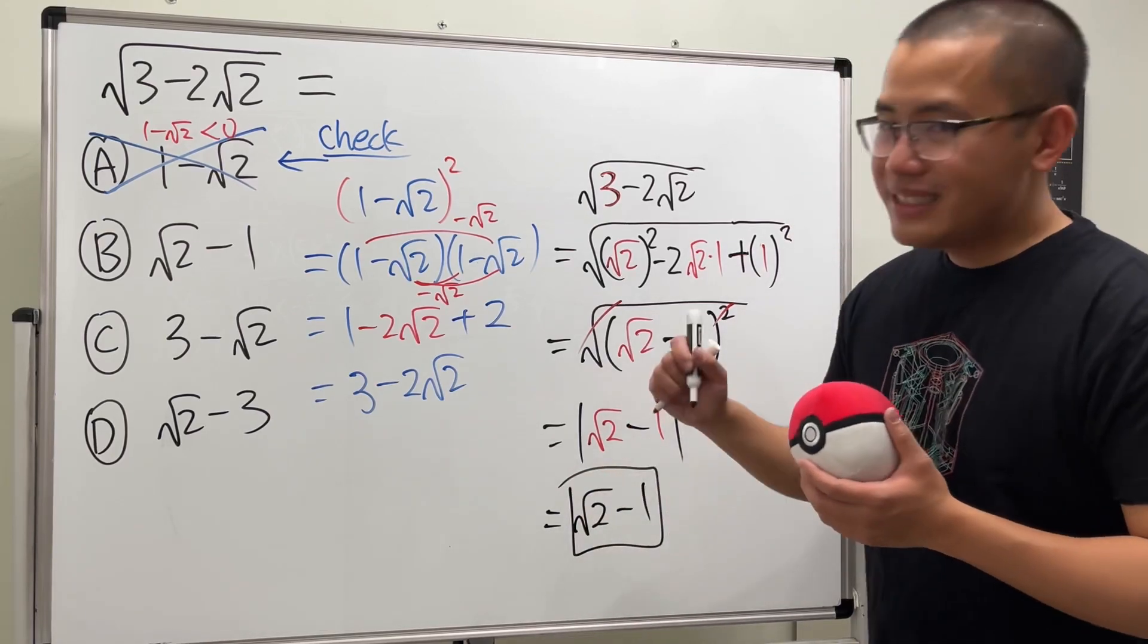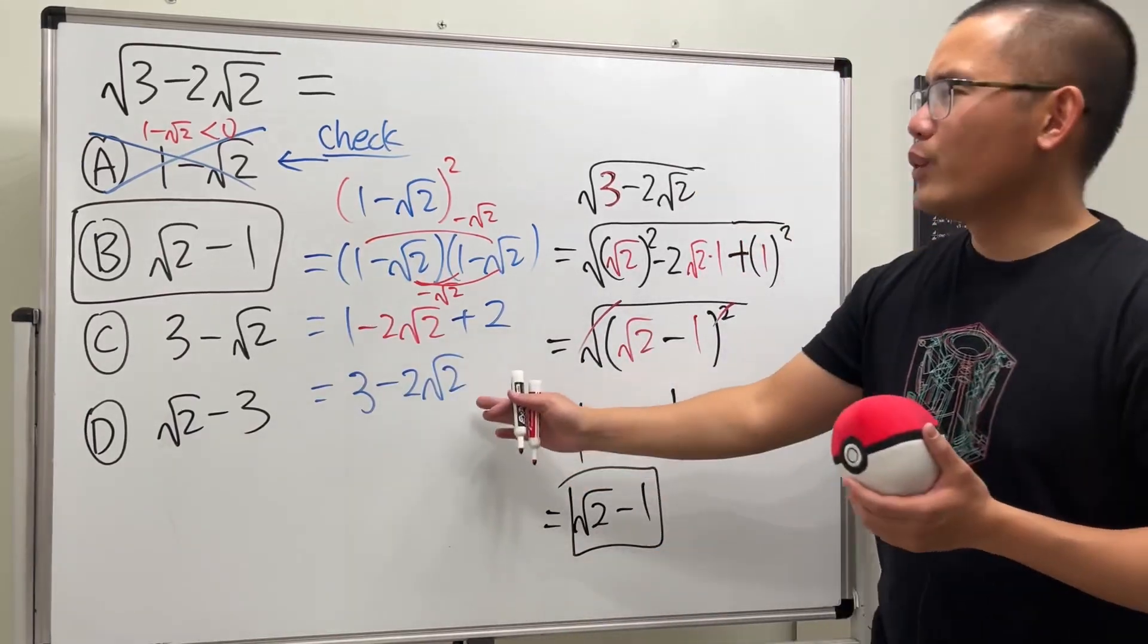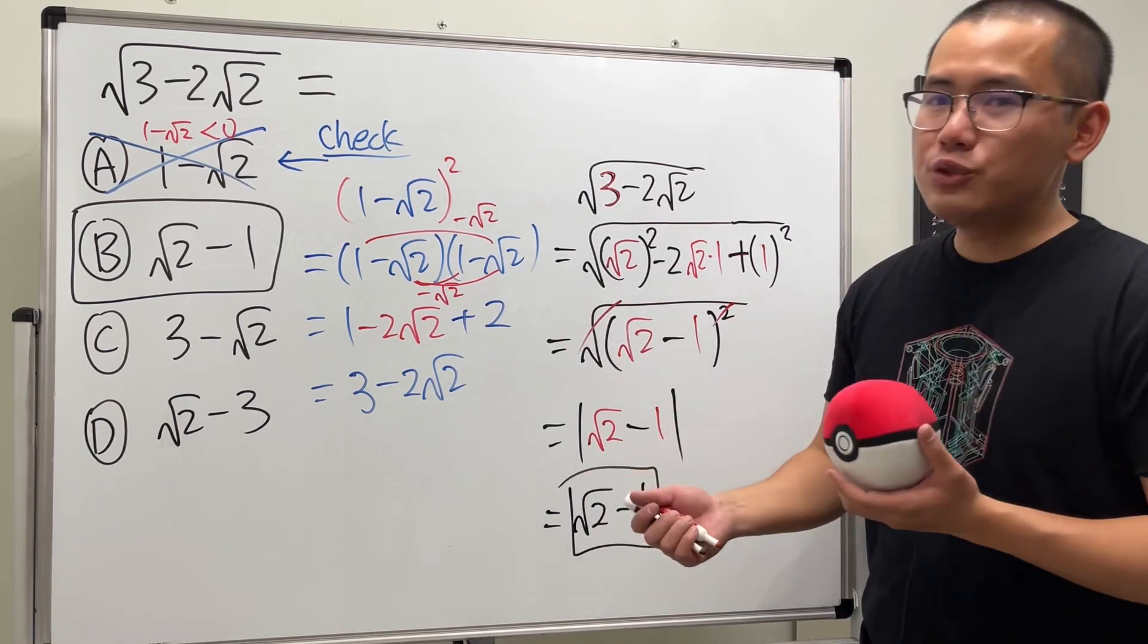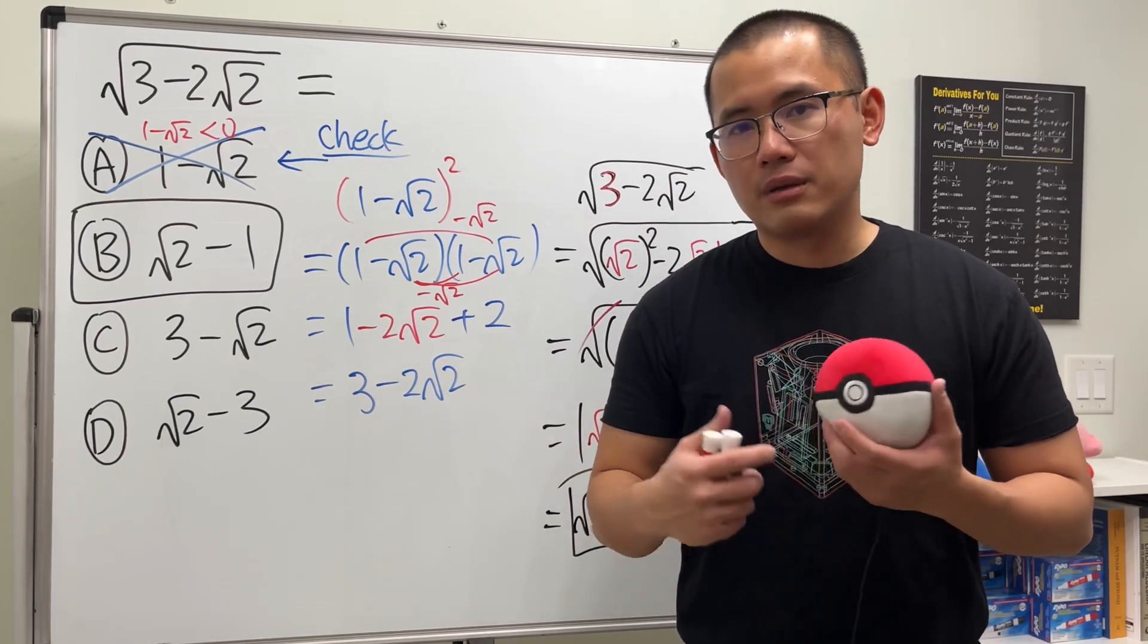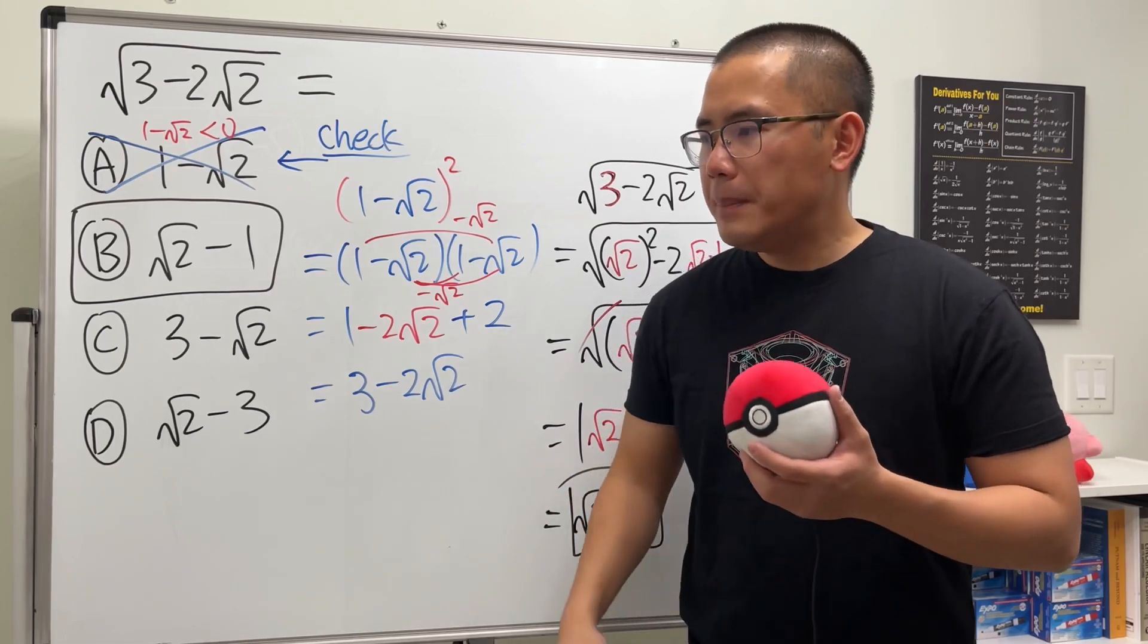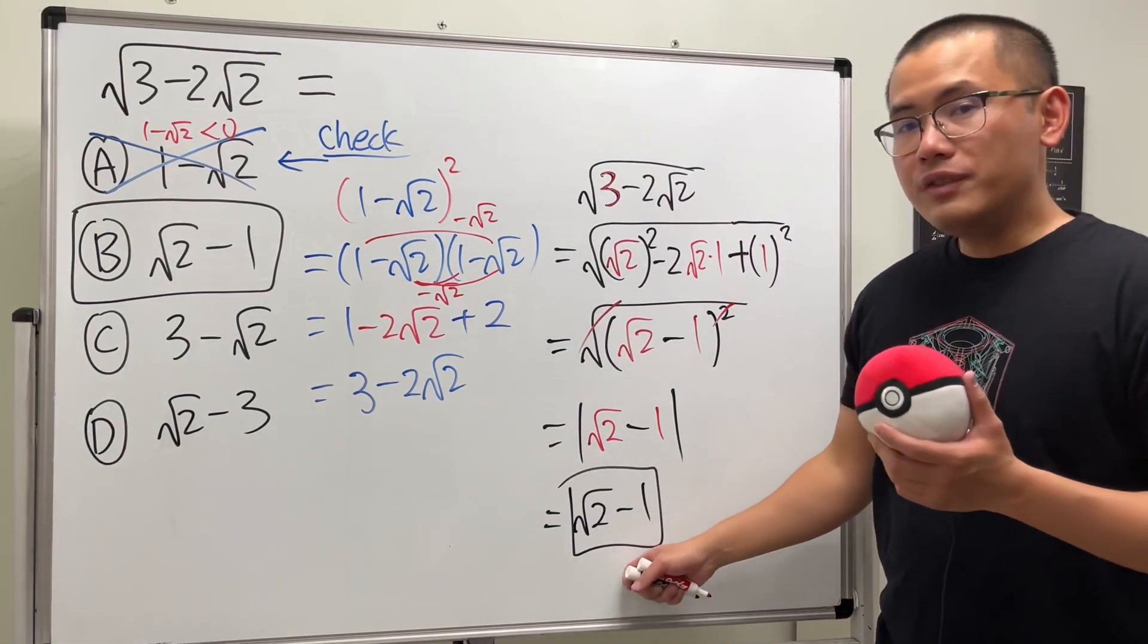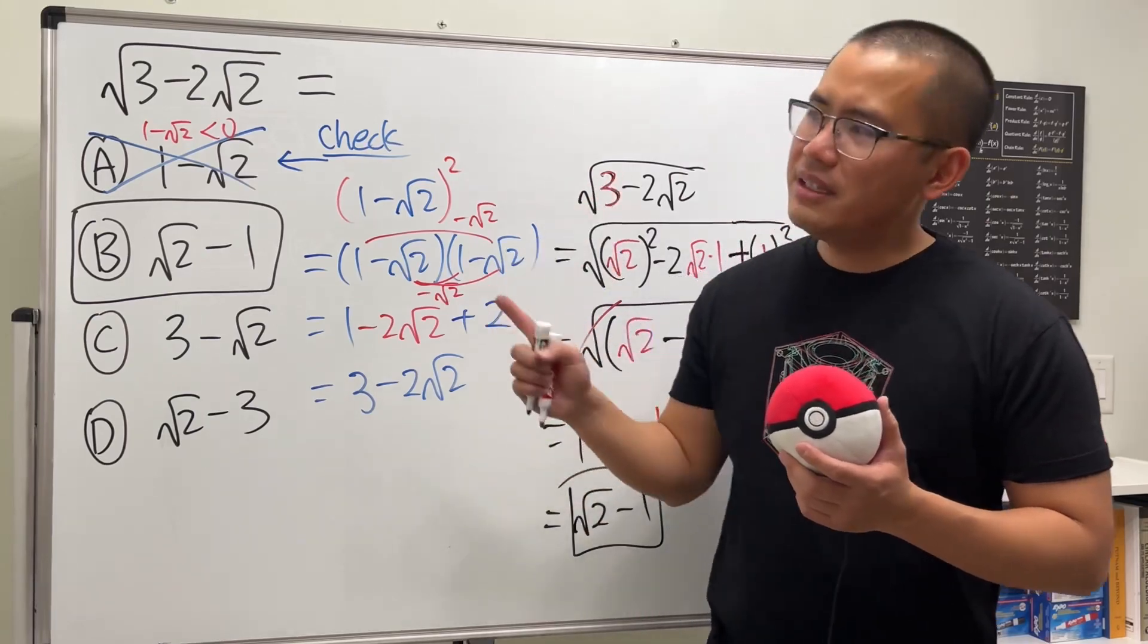So the answer is B. Do not square both sides. Sometimes we might not end up correct, and it's actually dangerous when we square both sides of an equation because we might end up with extraneous solutions, fake answers in other words. Hopefully this helps, and if you want to see more algebra multiple choice questions, check out my playlist.